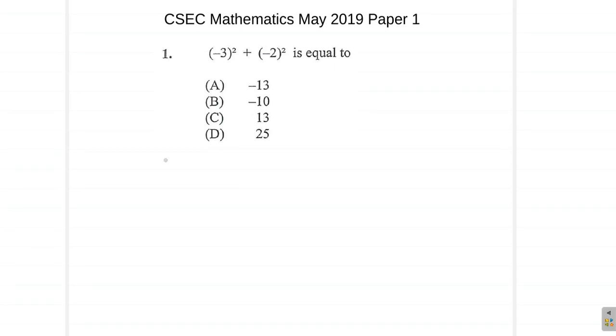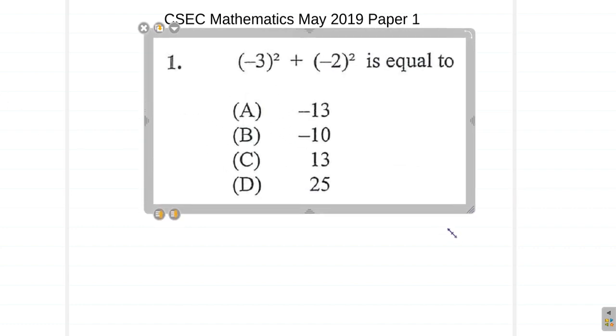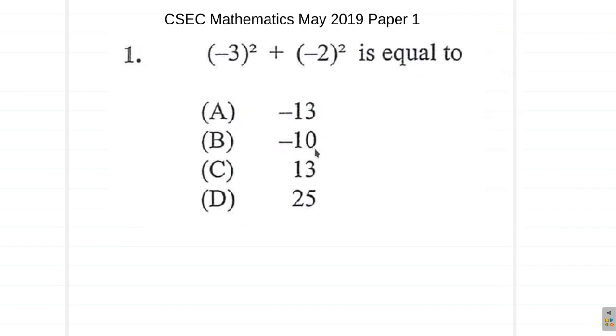We are doing the CSEC Mathematics May 2019 Paper 1, and we are at the first question, question 1. So, let's go here. Let me see, we have negative 3 squared plus negative 2 squared. What is that equal to? Alright.